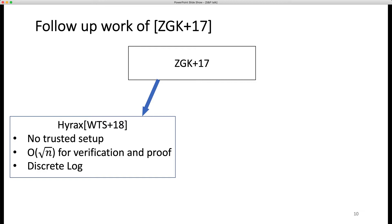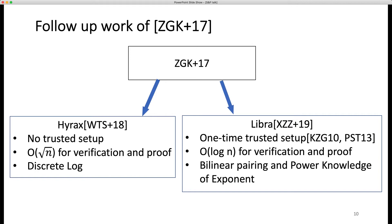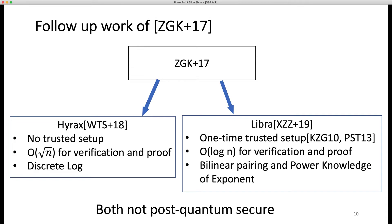In HyRx, the prover time in the new polynomial commitment is O(n) cryptographic operations, while both the verification time and proof size are O(√n). It is based on the discrete log assumption, which is not post-quantum secure. In Libra, they improve the prover time of the GKR part to linear of the circuit size and achieve zero-knowledge on ZGK17 without overhead. But Libra still uses the polynomial commitment of PST, which needs one-time trusted setup, and the prover time involves modular exponentiation on elliptic curve groups. The proof size and verification time are succinct, but it is still not post-quantum secure.